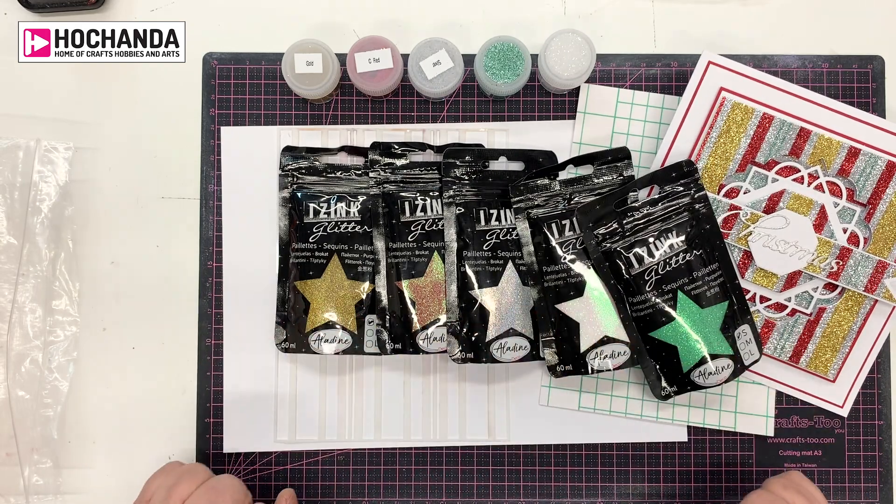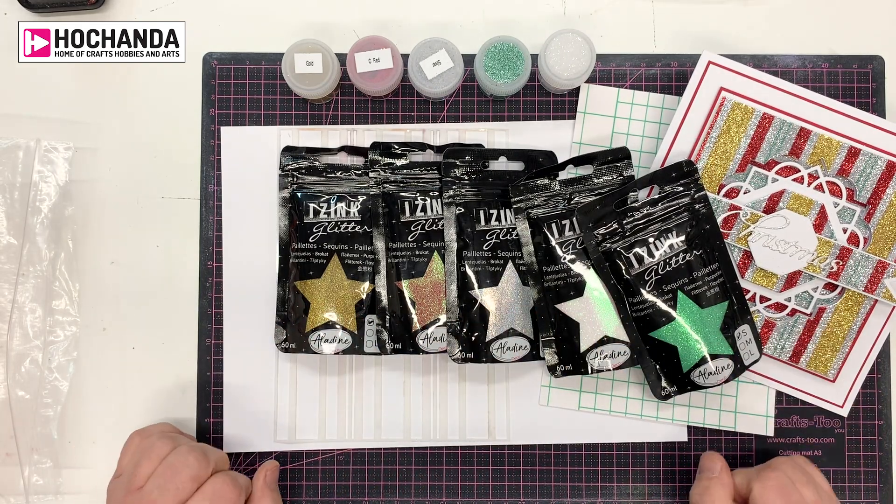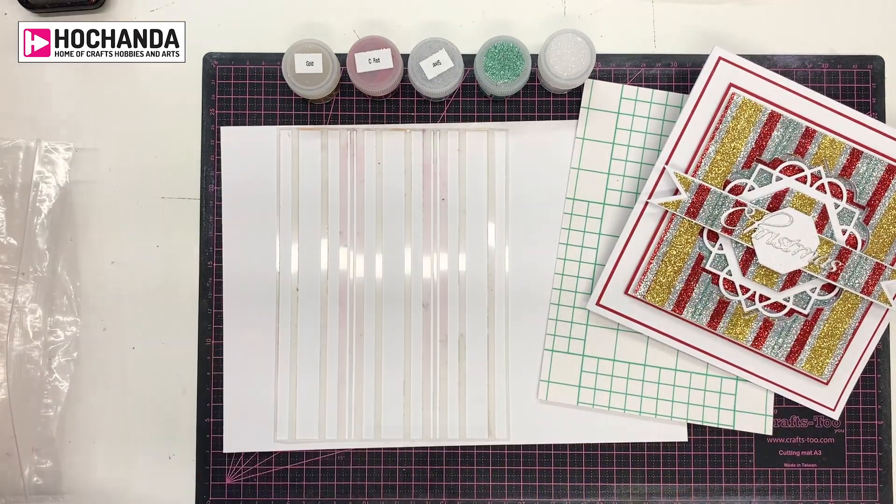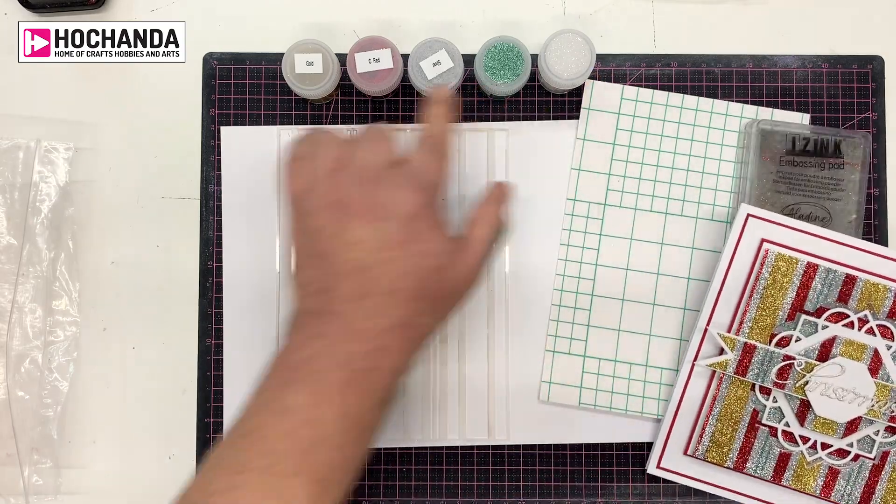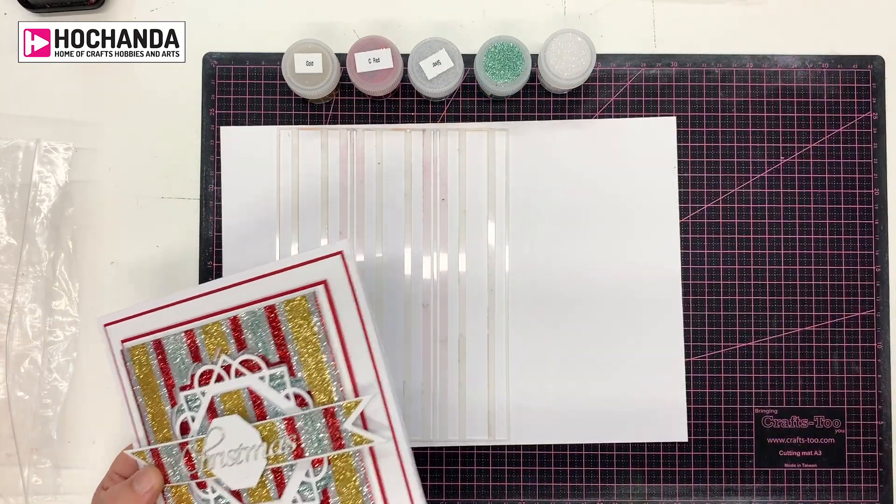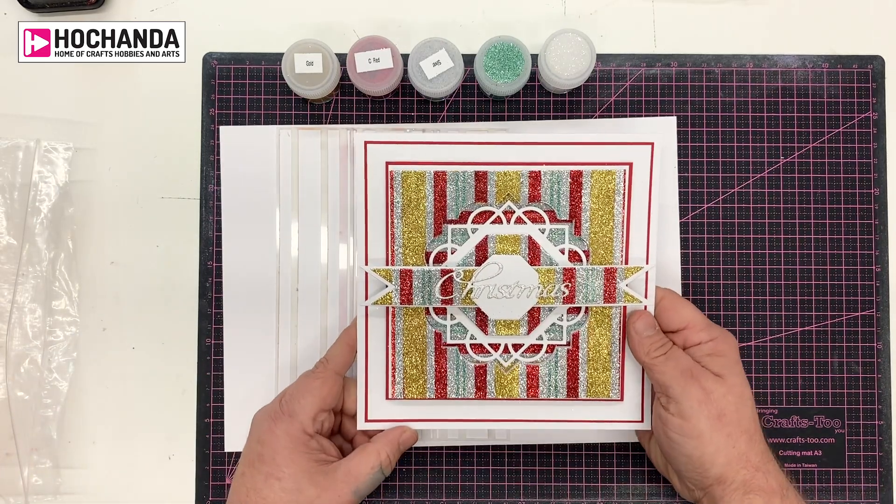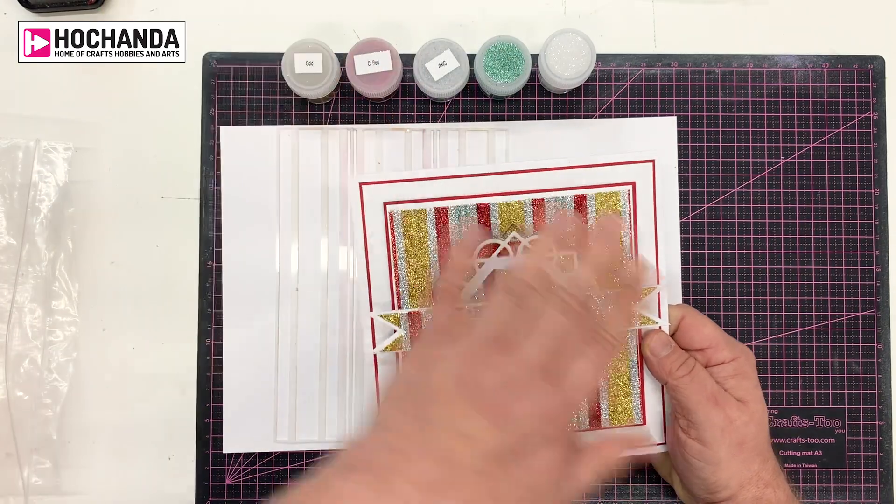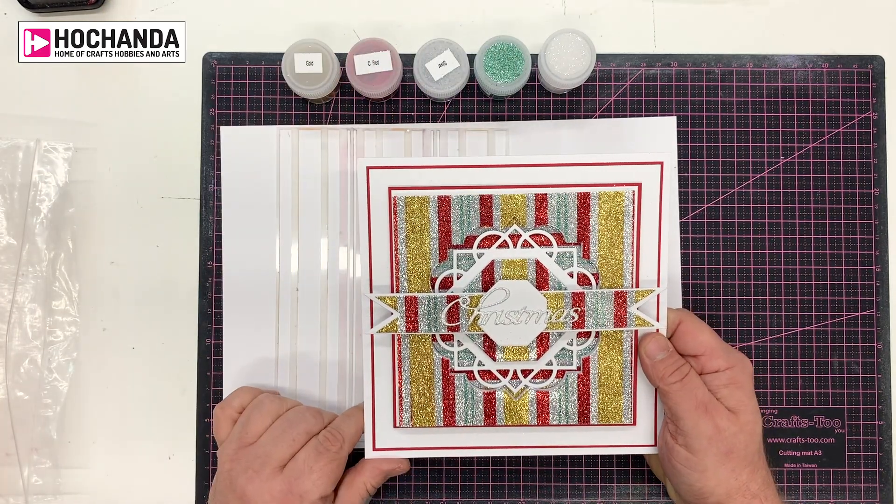And these have all got interference in them, so they've all got a little bit of a holographic finish to them. So I'm just going to move those away to one side, because I've already decanted mine into little pots. Each pouch has 60 mils of glitter in there, so there's more than enough. It will actually fill these pots around five to six times, so you don't have to worry about running out of it.